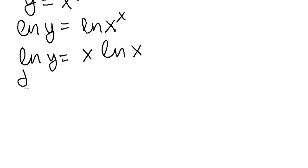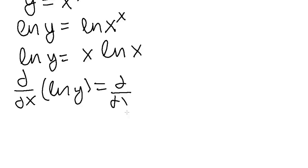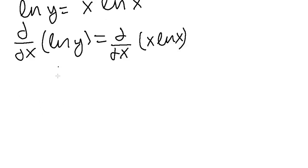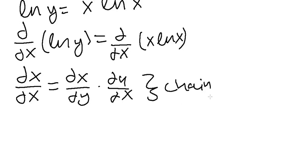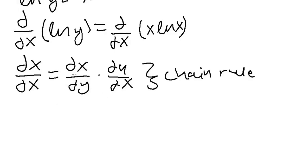From here, we take the derivative with respect to x of both sides. To take the derivative with respect to x of the natural log of y, we use the chain rule: dx over dx is equal to dx over dy times dy over dx. The derivative of the natural log of y is 1 over y, so we multiply by dy over dx to get 1 over y times dy over dx on the left side.